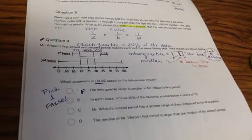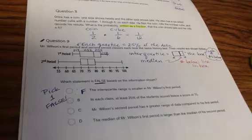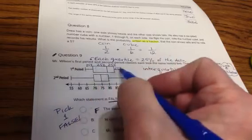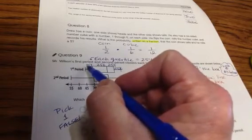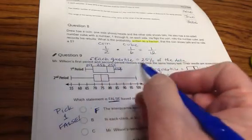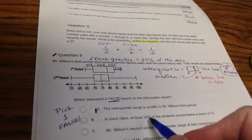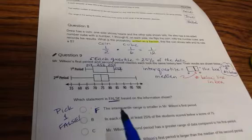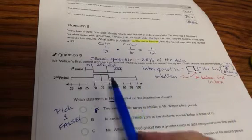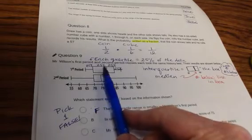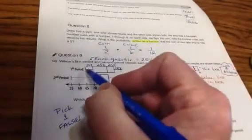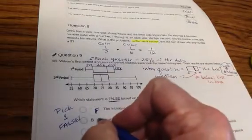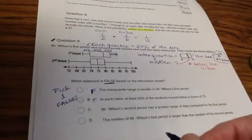Letter B. In each class, at least 25% of the students scored below a score of 75. With box and whiskers, each little chunk, it's broken up into four different parts. Each chunk is representing 25% of the data. So each quartile equals 25% of the data. We're looking for a score of 75. At least 25% scored below a score of 75. Well, here, this is more than 25% that scored below 75. And here, it's 50% that scored less because it's one quartile, two quartiles. So that looks to be true. Good. Don't count that one because we're looking for the false.